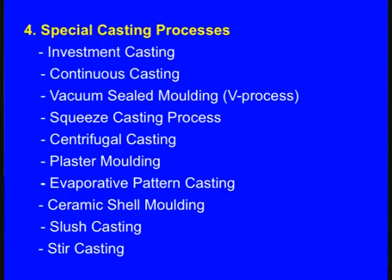Till now we have seen the classification and overview of different casting processes. We have seen the overview of conventional molding, chemical sand molding, permanent molding, and special casting processes, and we are going to learn all these in detail in subsequent lectures. Our next topic is the selection of the casting process — which process to use to make a particular casting, which would be more economical, or give the best surface finish or dimensional accuracy.